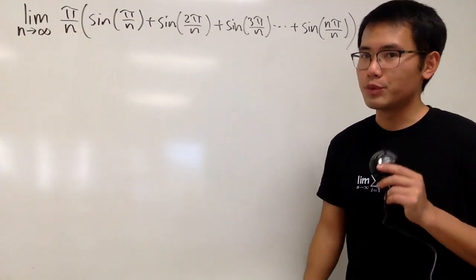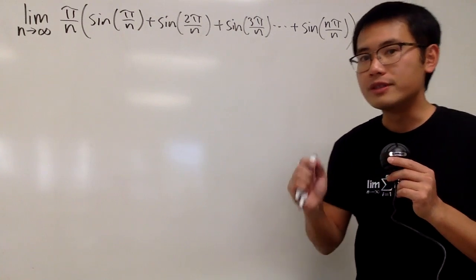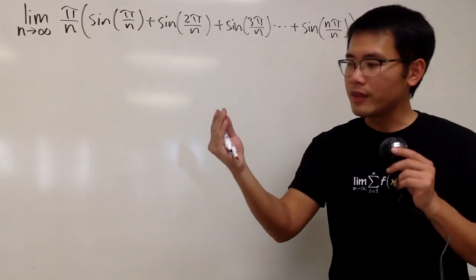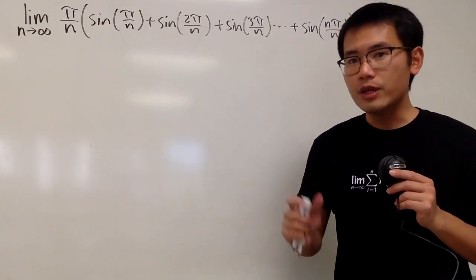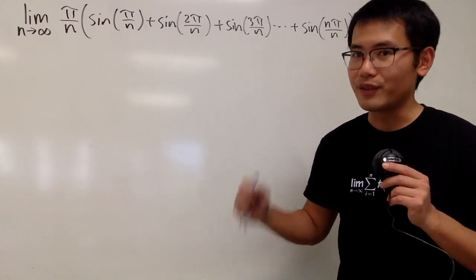Okay, we are going to compute this limit, and this right here is a Riemann sum situation. So we should know that this represents the area under a curve from a number to the other. If we can tell the function and also from where to where, we will be able to change this to an integral and solve it from there.